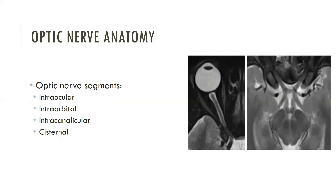The optic nerve has four segments. The anterior portions are well visualized on CT, while the posterior portions are better visualized on MRI. The intraocular segment is referred to as the optic disc or optic nerve head, representing the tiny segment of nerve that emerges from the scleral opening in the posterior globe. The intraorbital segment represents the remaining portion within the orbit before entering the optic canal. The intracanalicular segment is the short segment passing through the optic canal alongside the ophthalmic artery. The cisternal segment represents the intracranial portion lying within the suprasellar cistern.